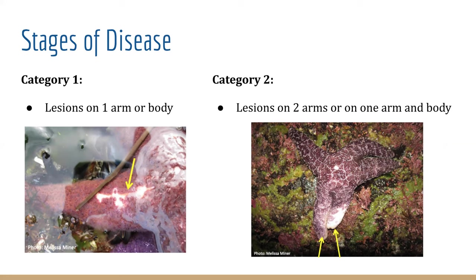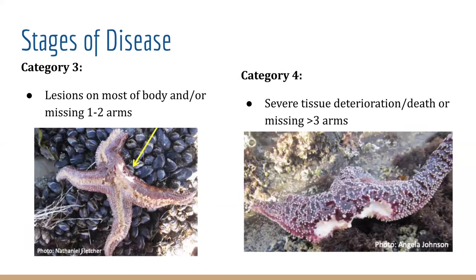Category 1 includes white lesions on one arm or lesions on its body. Category 2 is lesions on two arms or on one arm and some on its body. Category 3 is when there are lesions all over a Seastar's body and it's missing one to two of its arms.